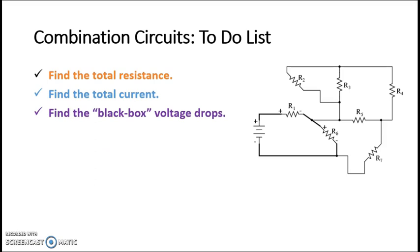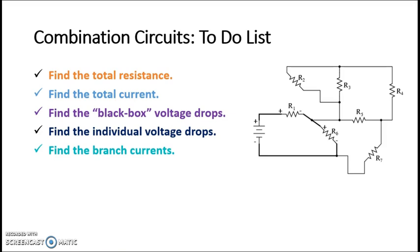Having found the total current, work on your simplified diagram. Find the voltage drops in any of the relevant black boxes. Go to the next most simplified diagram and find the voltage drops on individual elements. If you know the voltage drops, then you can find the branch currents. Alternatively, if you're working on a series, you can find the branch currents first and then find the individual voltage drops. At this point, you can do any calculation in any order to get what the problem is asking for. You will then know everything there is to know about a combination circuit and be ready to build one.